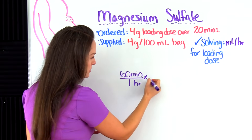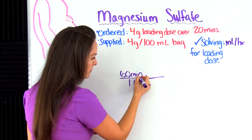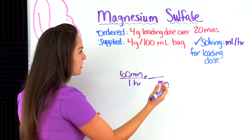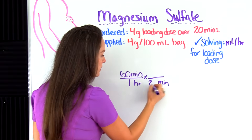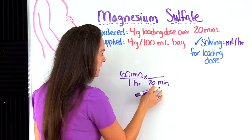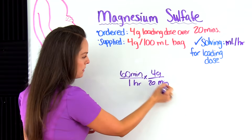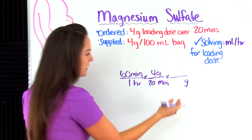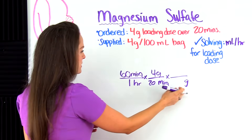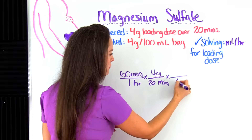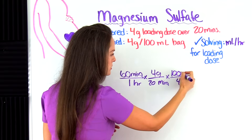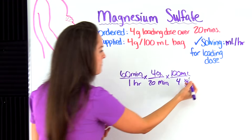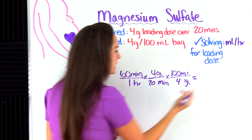We know that 60 minutes equals one hour, and that gives us our hour. When we set up dimensional analysis, we multiply and move our conversion factors across. The healthcare provider wants the loading dose over 20 minutes, so we plug in 20 minutes with four grams — that cancels out minutes. Now we bring grams over and plug in what we're supplied with: four grams equals 100 mL, and that cancels out grams.